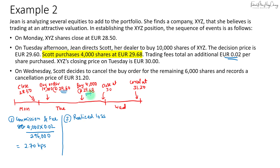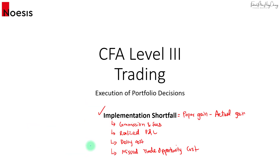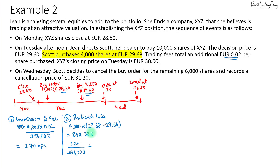The second component is the realized loss. The order was placed at 29.60 but shares were bought at 29.68, so there's a realized loss of 8 cents per share. Taking the 4,000 shares purchased times 29.68 minus 29.60 gives a realized loss of 320 euros, which converts to 10.81 basis points (320 over 296,000).